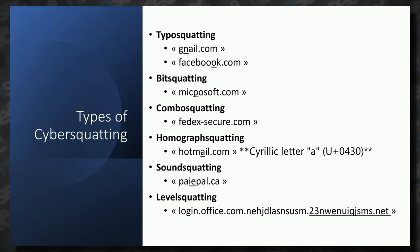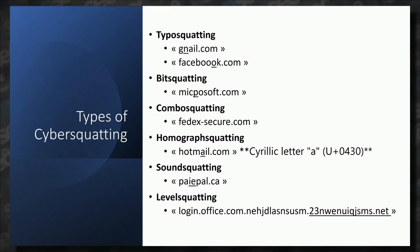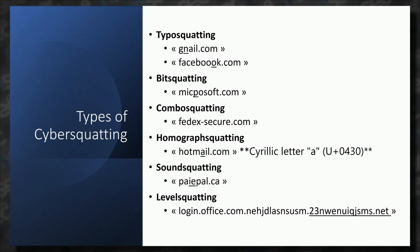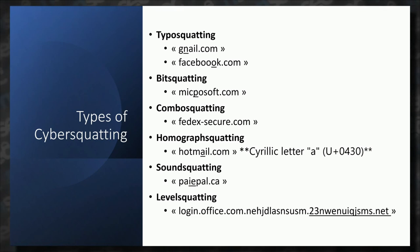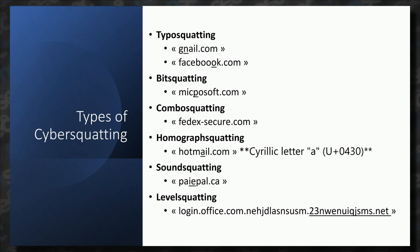Homograph squatting is an interesting example — 'hotmail' looks exactly the same to a human, but in this case it's a different character registered in DNS. Then there's a shout-out to all the francophones — 'paiepal.ca'. Level squatting is another technique we see a lot especially with mobile, given limited screen size — the domain name gets truncated to the left-hand side and everything on the right is ignored, so the user isn't paying attention to the real domain or TLD.